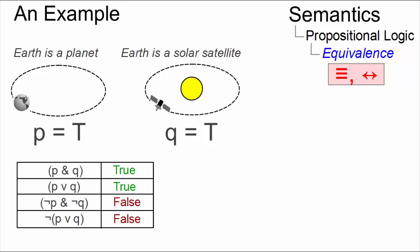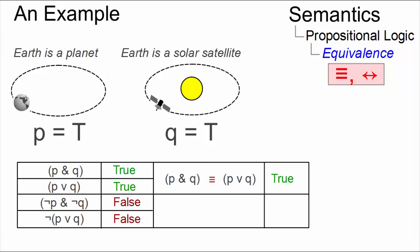All those statements that have the same truth value can now be defined as logically equivalent. The statement P and Q is equivalent to P or Q is true. And the statement not P and not Q is equivalent to not P or Q is also true.